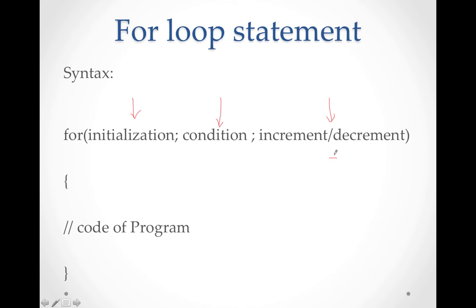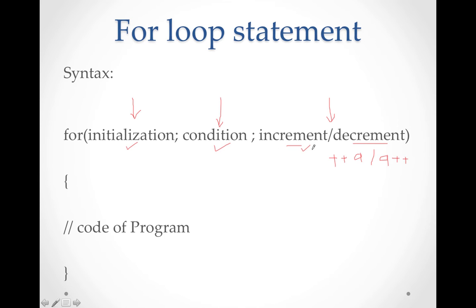Increment or decrement is written as ++A or A++, and similarly for decrement with --. So in the for loop syntax, you write these three things: initialization means what starting value the variable has; condition means compare value; and increment or decrement. Based on these, the code of your program will execute.